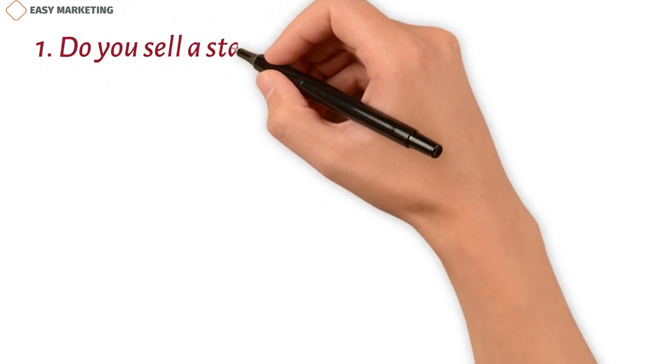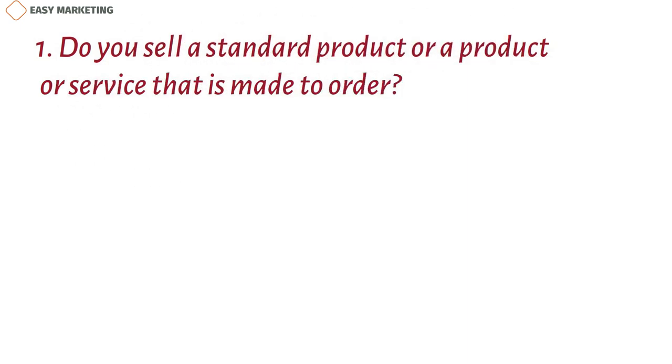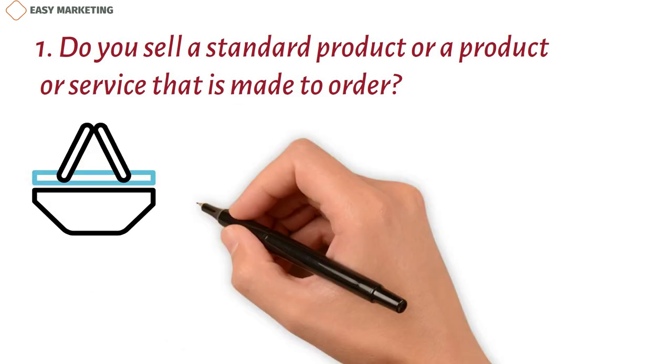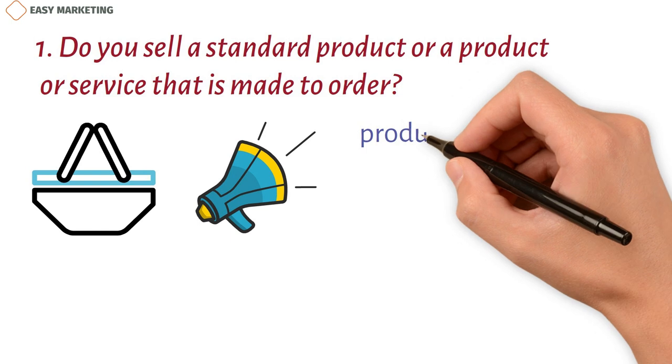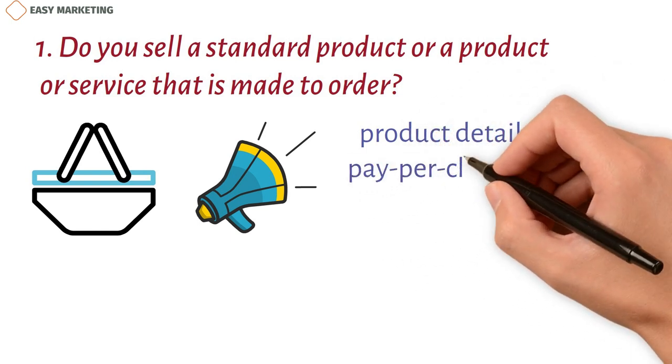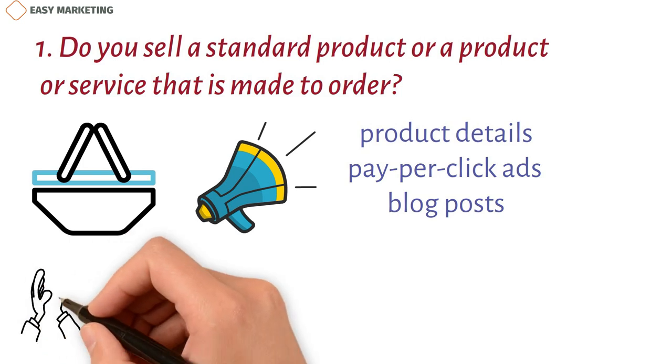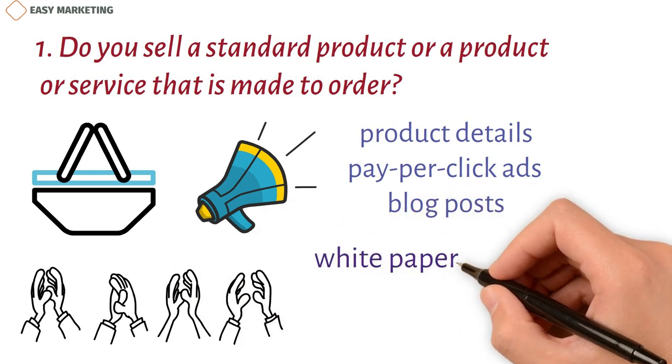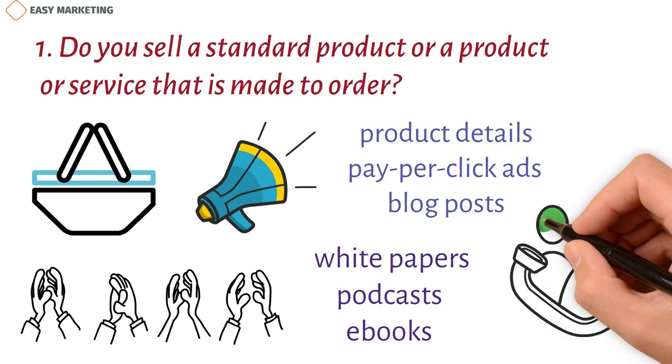Ask yourself the questions below to figure out what choices might be best for you. Do you sell a standard product or a product or service that is made to order? Ecommerce systems can be used to sell simple, everyday goods online. You can promote them with things like product details, pay-per-click PPC ads, and blog posts that help with SEO. Some goods and services that are made to order may require more hands-on work. Think about making tools like white papers, podcasts, and ebooks to get more leads.